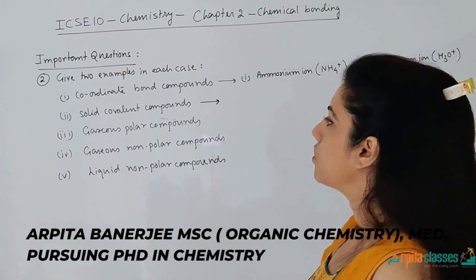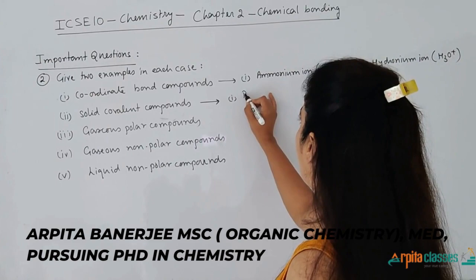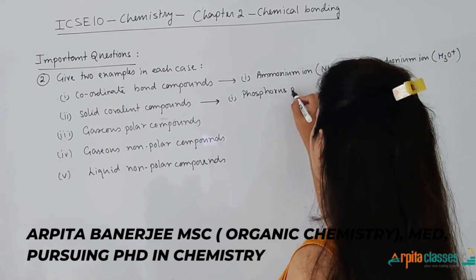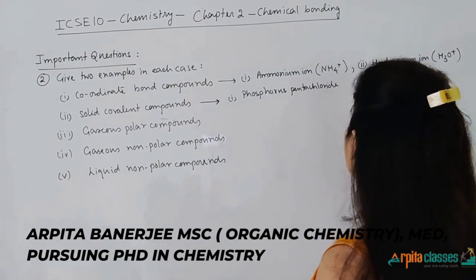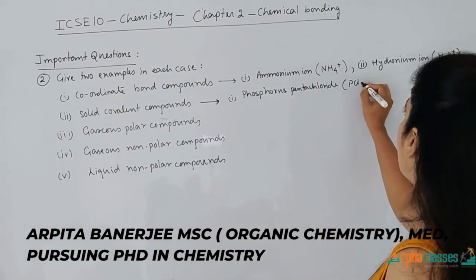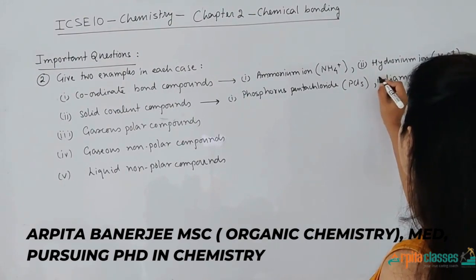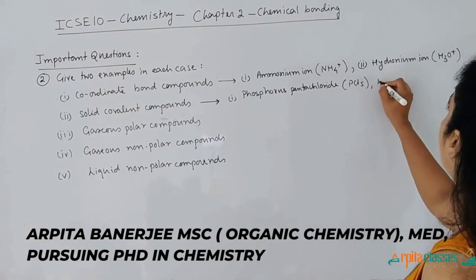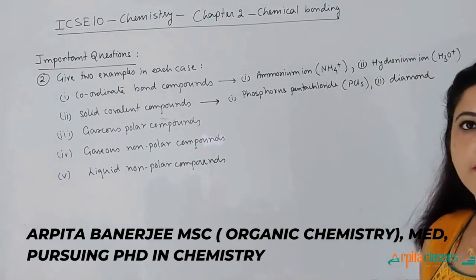For solid covalent compounds, you can give the example of phosphorus pentachloride (PCl₅) as the first example and diamond as the second example.